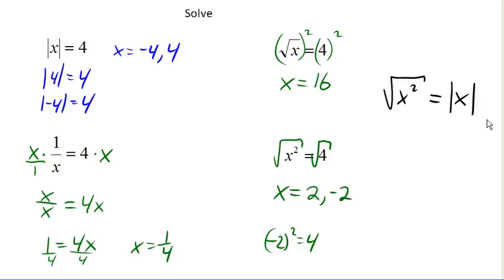So, for example, the square root of negative 3 squared, which is the square root of 9, which is 3, is equal to the absolute value of negative 3, which is 3.